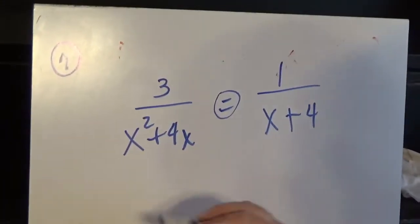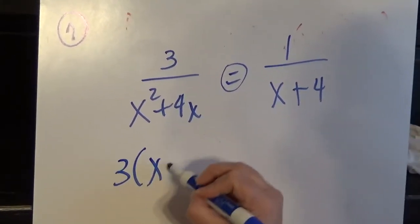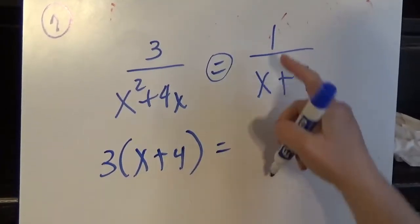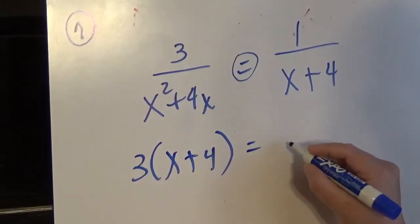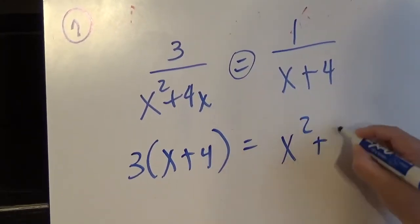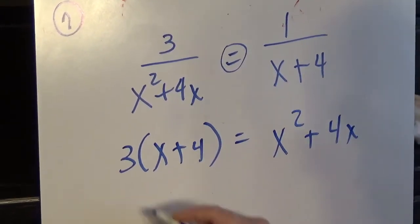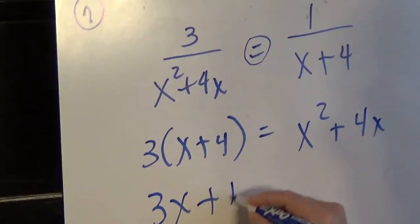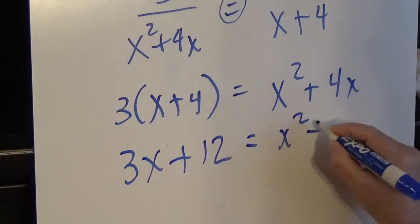I'm going to have 3 times x plus 4 equals 1 times x squared plus 4x, which is just x squared plus 4x. So 3x plus 12 equals x squared plus 4x.